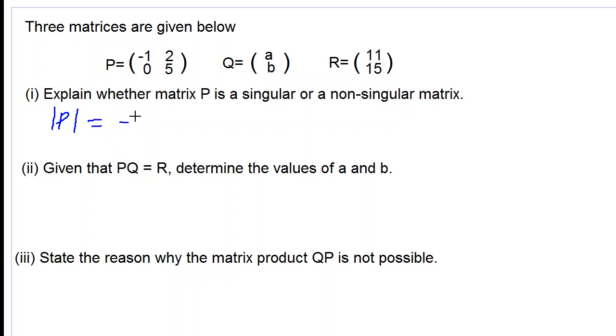So negative 1 times 5 subtract 0 times 2, which is equal to negative 1 times 5 is negative 5 subtract 0 times 2 is 0. Negative 5 subtract 0 is negative 5.